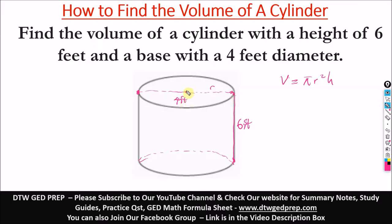So to get the radius, the radius is always half the diameter. If you remember, the formula for radius is always half the diameter. So half of four. So here is two, here is two. So our radius is two feet.